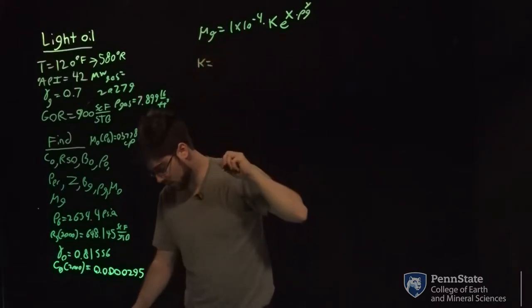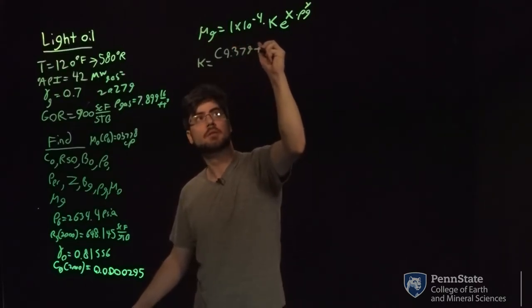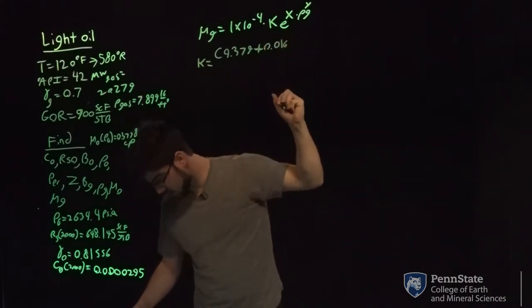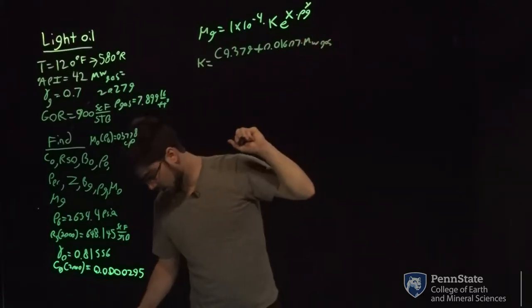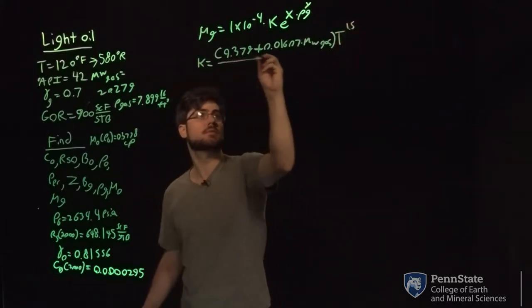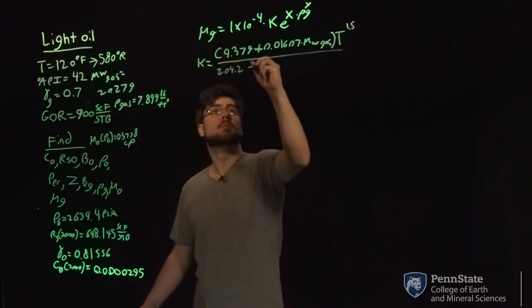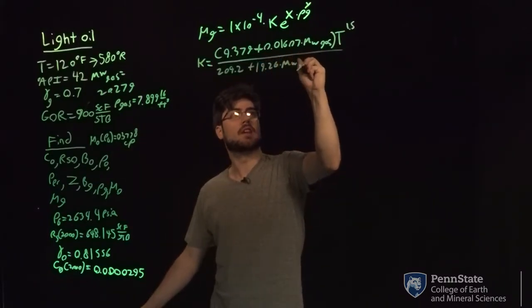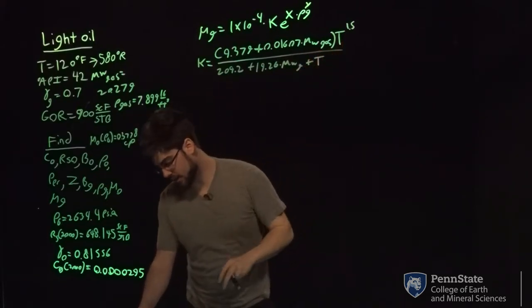k equals 9.379 plus 0.01607 times the molecular weight of the gas times t to the 1.5 all divided by 209.2 plus 19.26 times the molecular weight of the gas plus t. These temperatures will be in Rankine, by the way. So that's important to note.